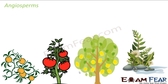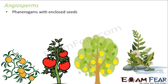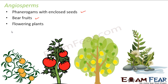Angiosperms have seeds enclosed inside fruits. Most of the plants we see around us are angiosperms — rose plants, lily plants, tomato plants, and orange plants are all angiosperms. These are phanerogams with enclosed seeds; they bear fruits which enclose the seeds, and they are also flowering plants.